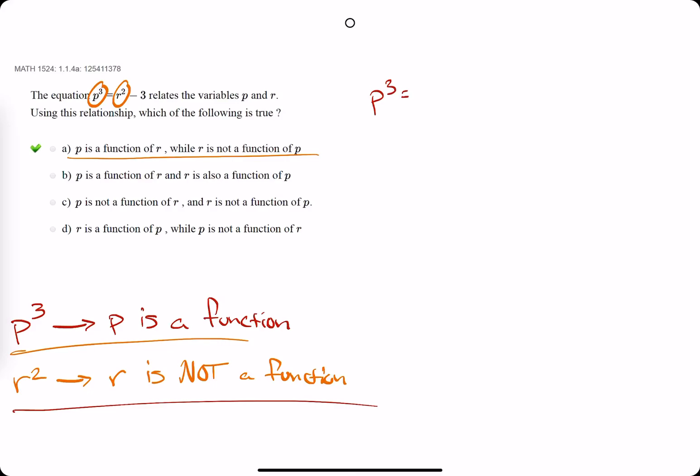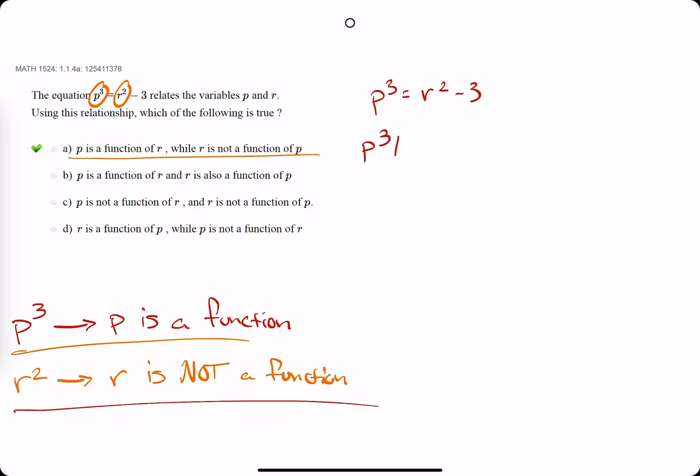So starting with the original function here, the goal is to get r by itself. So we're solving for r in terms of p. So we're getting r by itself, add a 3 to the one side, we have r squared, but then we have to take the square root of both sides.